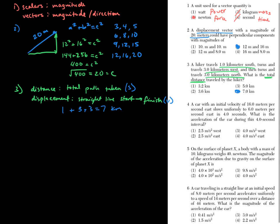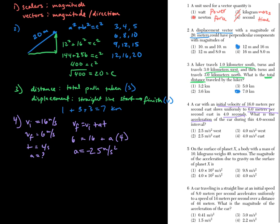Number four is a standard kinematics calculation. An initial velocity slows to a final velocity over a given time, and we're solving for acceleration. You get an answer of negative 2.5 meters per second squared. The negative sign is necessary: the car is traveling east and slowing down, meaning something is pulling it west, so the acceleration is directed west.